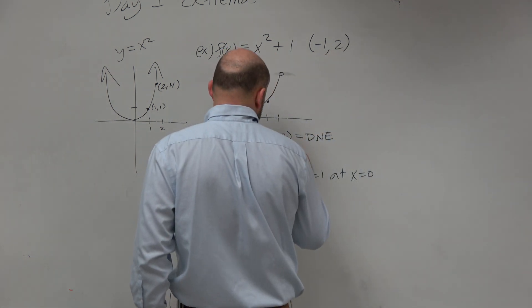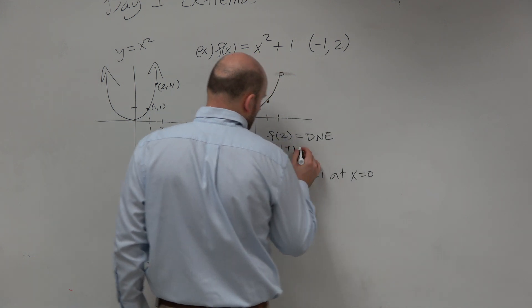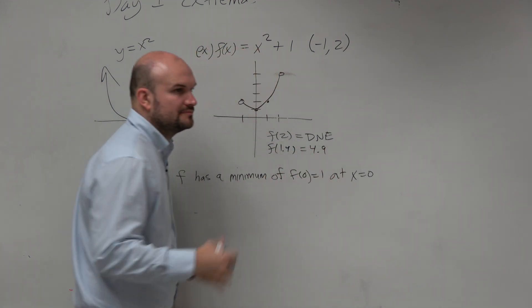So what about if we said like f of 1.9? We're going to get 4.9, I don't know, something, right? It's close to that. It's not even really that high.